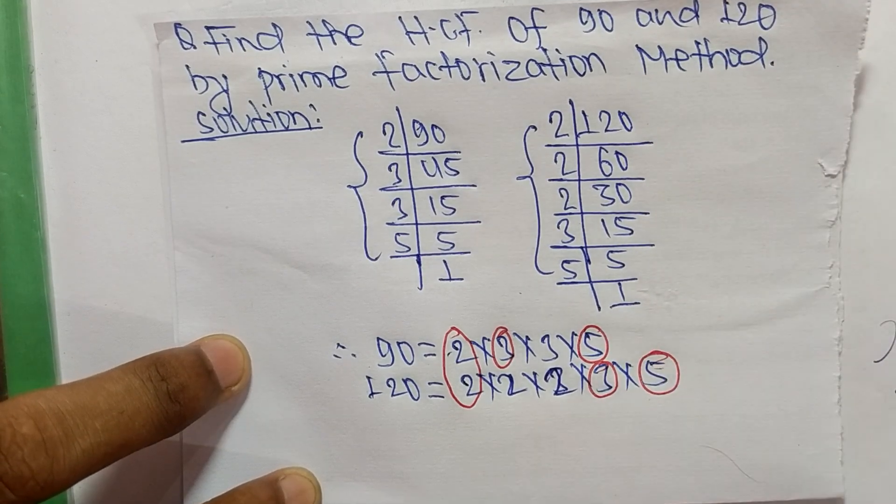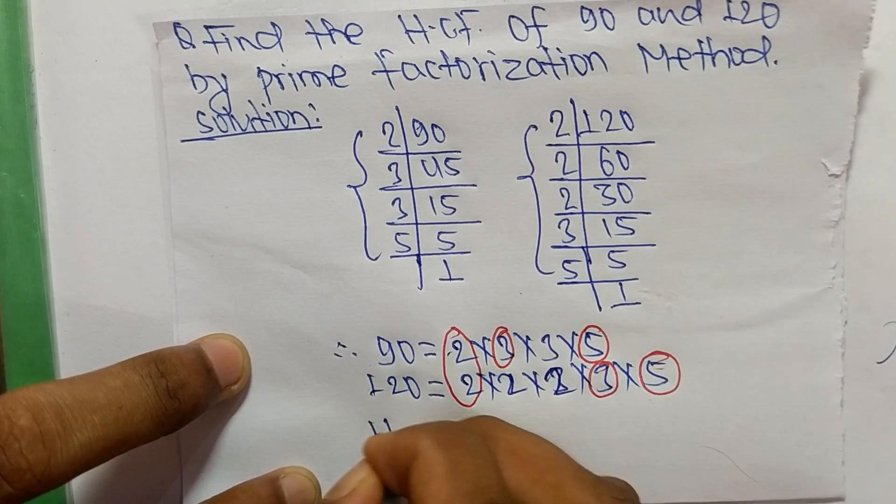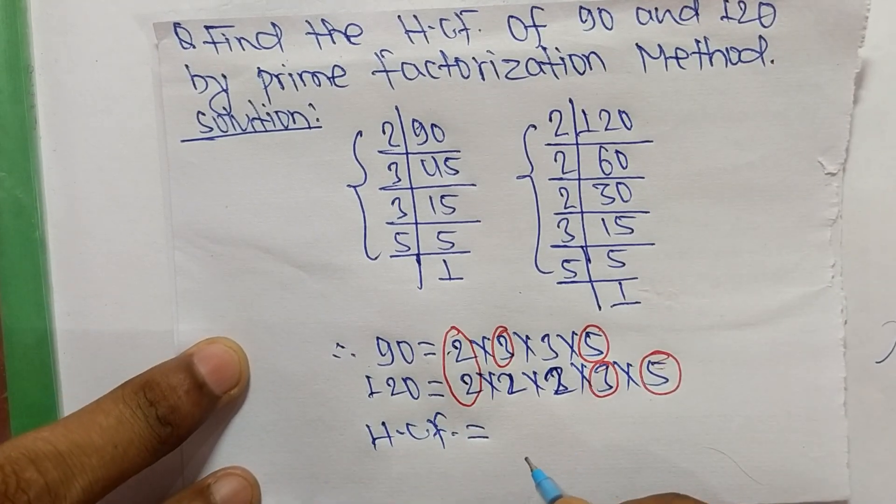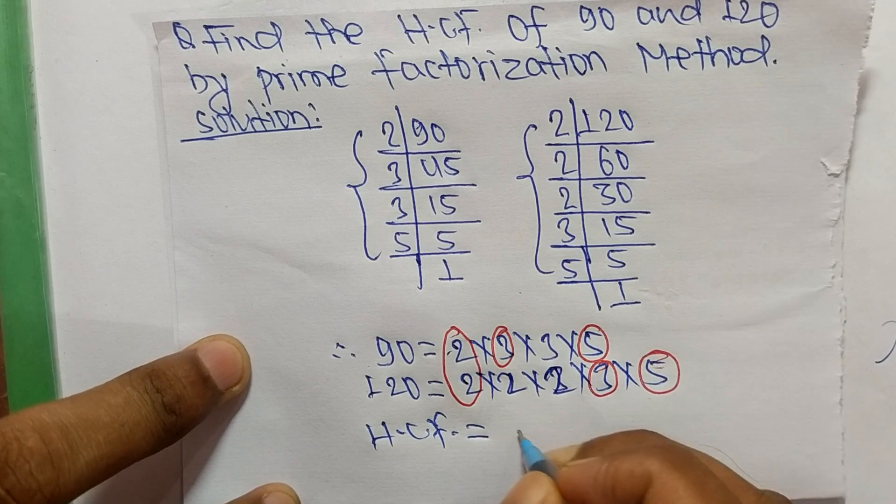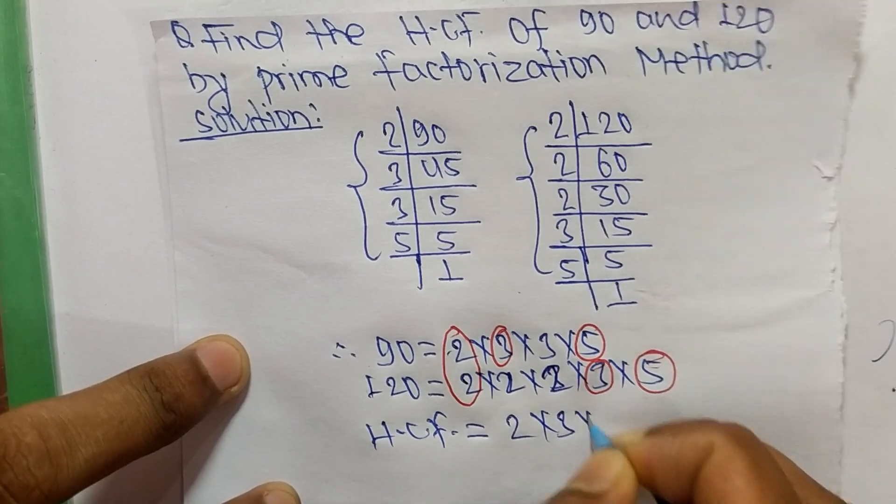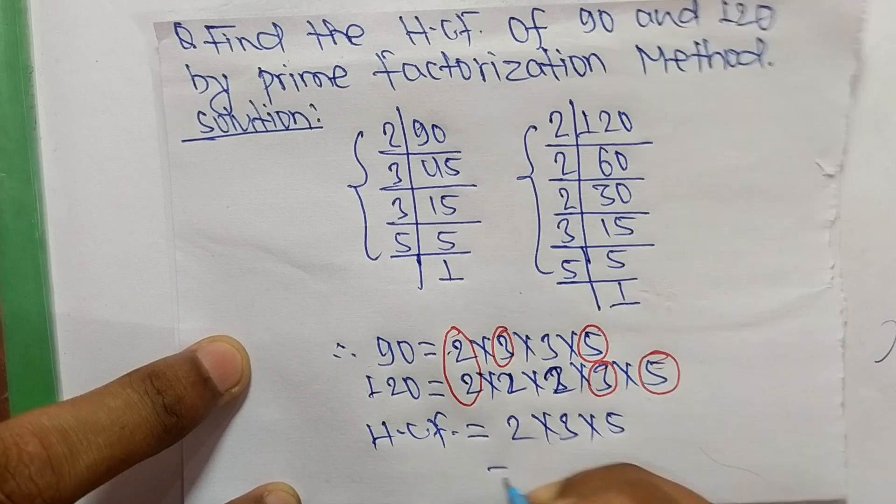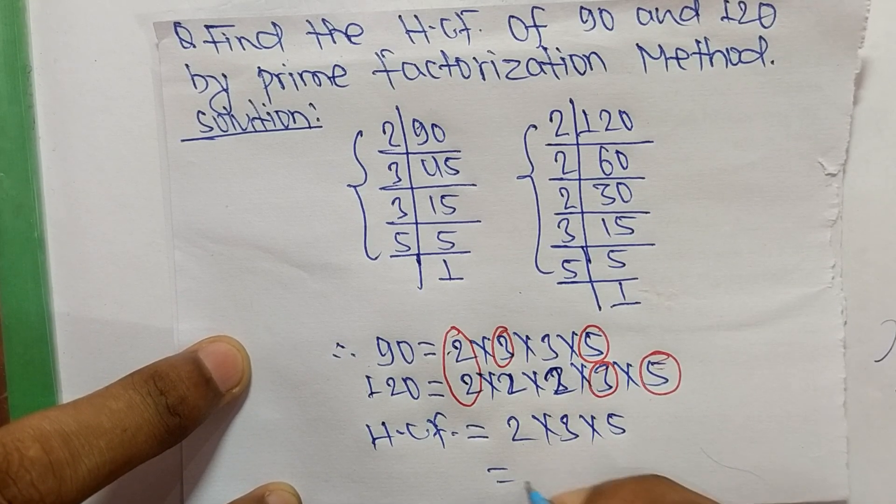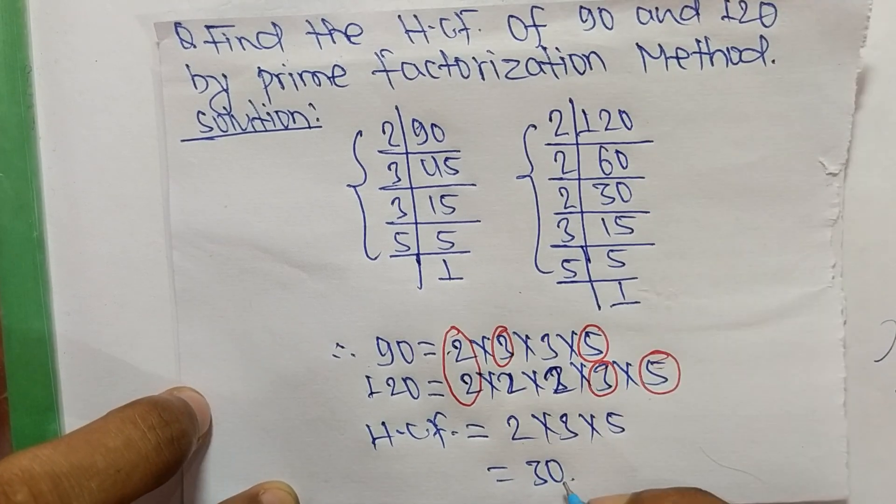So the HCF is equal to the product of common factors. The common factors here are 2, 3, and 5. So 2 times 3 equals 6, and 6 times 5 equals 30. So 30 is the HCF of 90 and 120.